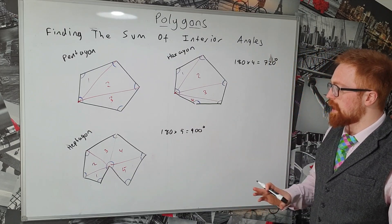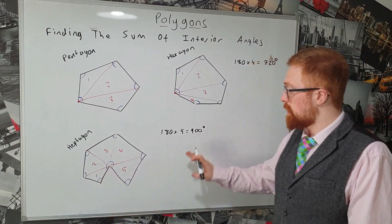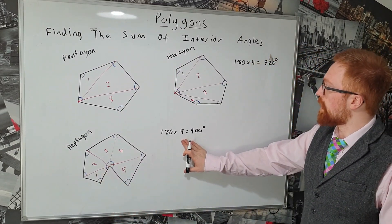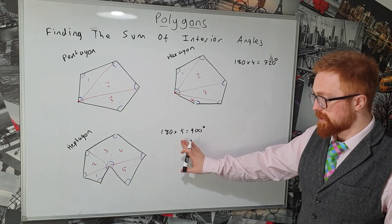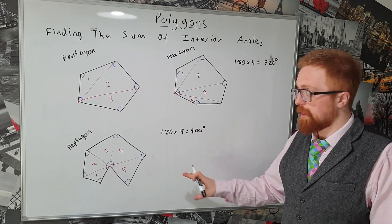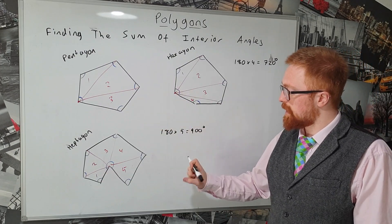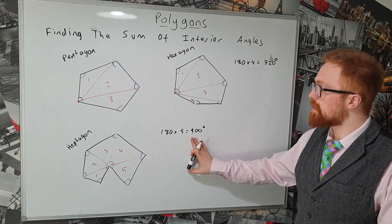And so hopefully you're seeing if we know how many triangles we can split a shape into, it becomes rather easy to figure out what the sum of the interior angles are. And we may have already spotted a pattern, but let's just have a quick look at how we can formalize exactly what the pattern is and find a formula that we can use to work out the sum of the interior angles.